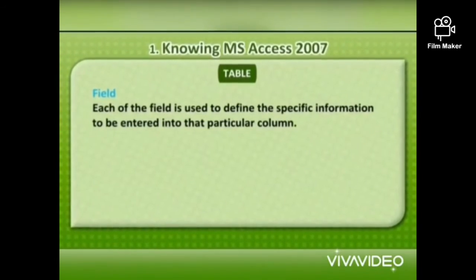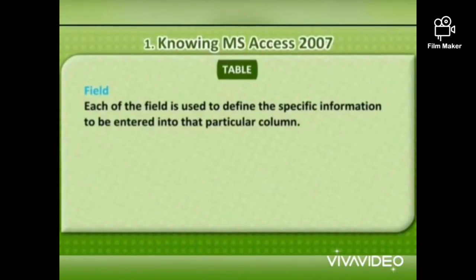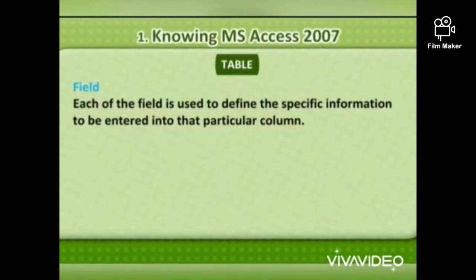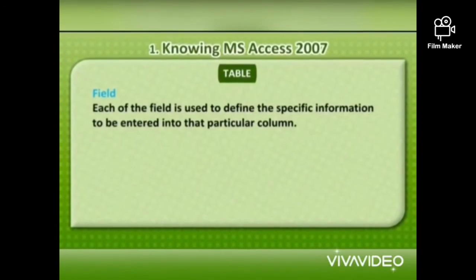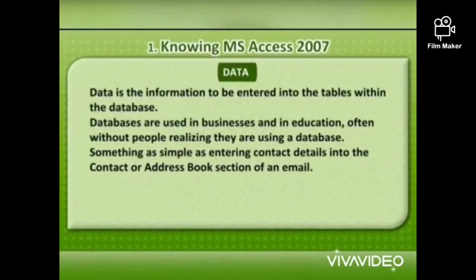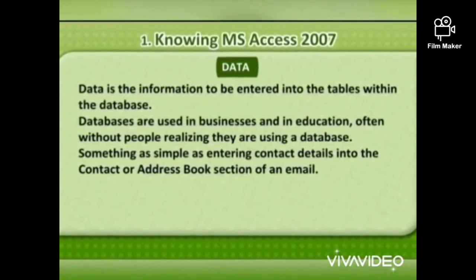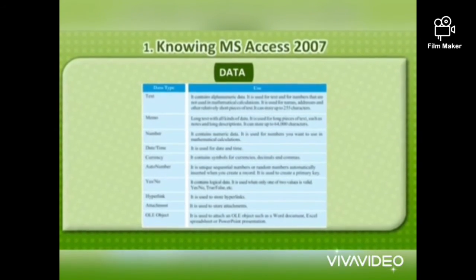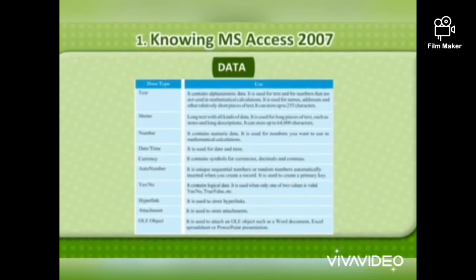Field: each column of the table is referred to as a field. It is used to define the specific information to enter into that particular column. Data is the information to be entered into the table within the database. Databases are used in mathematical calculations. Date and time: it is used for date and time values.